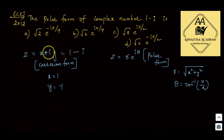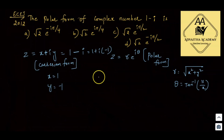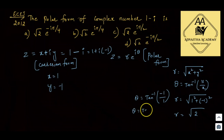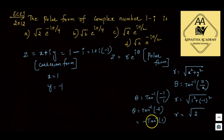With x equals 1 and y equals minus 1, r equals root of 1 squared plus minus 1 whole squared, which is root of 1 plus 1, which is root 2. Next, theta equals tan inverse of y by x, that is tan inverse of minus 1 divided by 1, which is tan inverse of minus 1. Since tan inverse of minus x equals minus tan inverse of x, this gives minus tan inverse of 1, which is minus pi by 4.